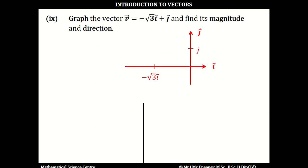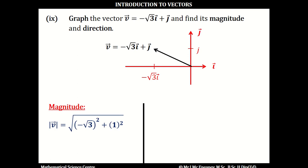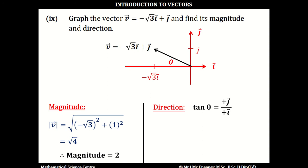In part 9, if we want to graph the vector v, which is minus root 3i plus 1j, we move to the left root 3 units and then up 1. Using Pythagoras' theorem, the magnitude of v is going to be the square root of minus root 3 squared plus 1 squared. This works out as root 3 plus 1, which is root 4, and that means the magnitude is 2. To get the angle theta, the tan of theta is the positive j over the positive i, so the tan of theta is 1 over root 3. This means theta is inverse tan of 1 over root 3, and the angle theta is 30 degrees. Negative i means west, positive j means north, so the direction is west, 30 degrees towards the north.